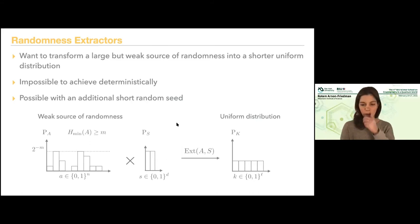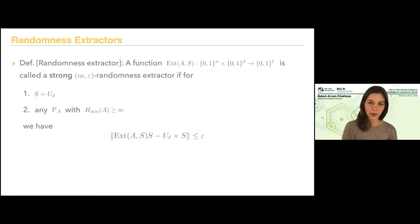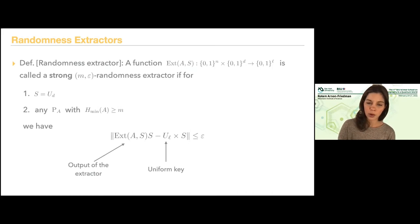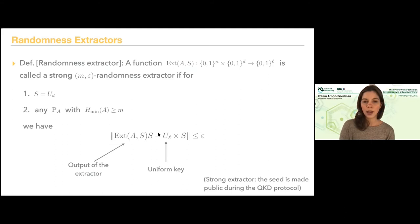The definition of a randomness extractor: a function is called an extractor if, when starting with a uniform seed and any probability distribution with a lower bound on the min-entropy, the output of the extractor — together with the seed (strong extractors) — is close to uniform. The distance between the output of the extractor and the uniform is upper bounded by ε. Even given the seed, we want the output to be close to uniform. This is called a strong extractor. In the context of QKD, the seed is going to be made public — Alice will apply the extractor, choose the seed at random, and send it over the public classical channel to Bob so Bob can apply the same function.